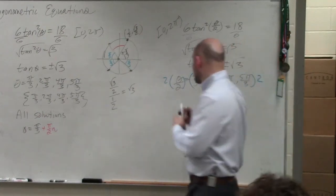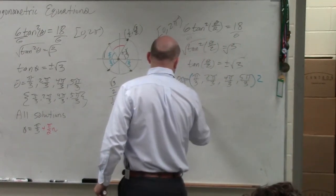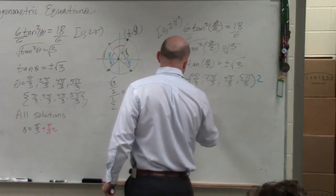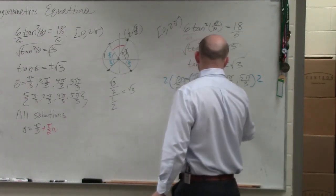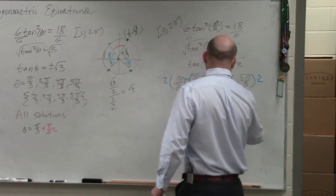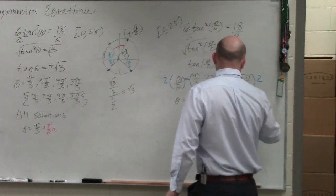So when I multiply by 2, I now get angles that are 2 pi over 3, 4 pi over 3, 8 pi over 3, and 10 pi over 3.